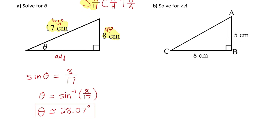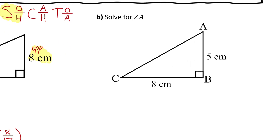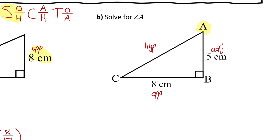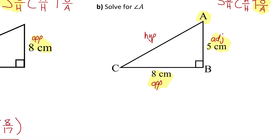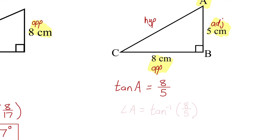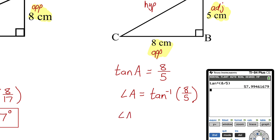In part B, solve for angle A. Labeling from reference angle A: hypotenuse across from the right angle, opposite across from A, and adjacent touching A. Because we know the opposite and adjacent sides, we use the tan ratio. Tan of A equals opposite over adjacent, so tan of A equals 8 over 5. Using inverse tan, angle A is approximately 57.99 degrees.